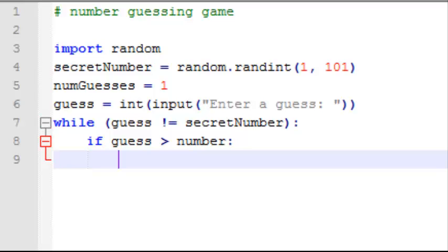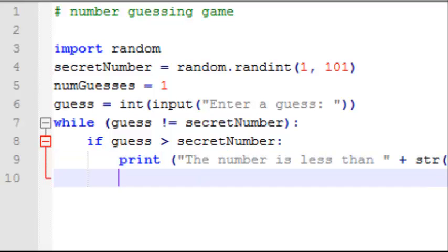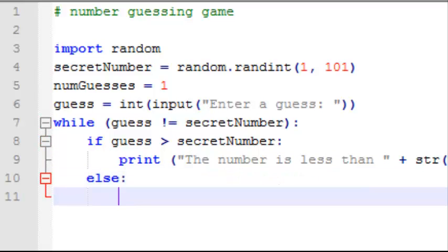So the first thing we'll do inside the while loop is compare guess to the secret number. And if guess is greater than a number, then we need to tell the user that the number is less than their guess. Otherwise, we'll tell the user that the number is greater than their guess.